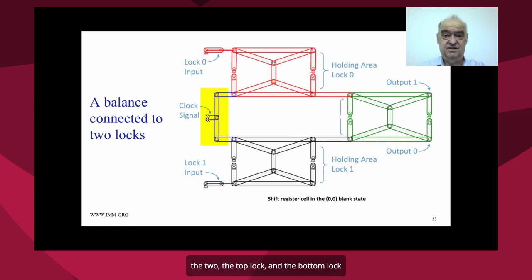The two, the top lock, and the bottom lock are labeled holding areas. And the output lock actually holds the data once the holding locks have held it, while the clock signal in the yellow area has been applied. So the idea here is fairly straightforward.